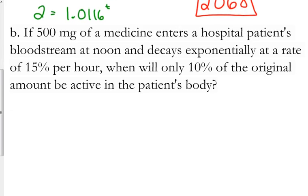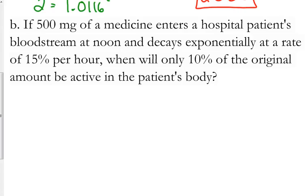Let's look at one of these medicine problems again. If 500 milligrams of a medicine enters a hospital patient's bloodstream at noon and decays exponentially at a rate of 15% per hour, when will only 10% of the original amount be active in the patient's body? So, let's set up our model. The amount of medicine at time T is equal to the initial amount, 500, times 1 minus, because it's decaying exponentially, 15% as a decimal is 0.15 raised to the T.